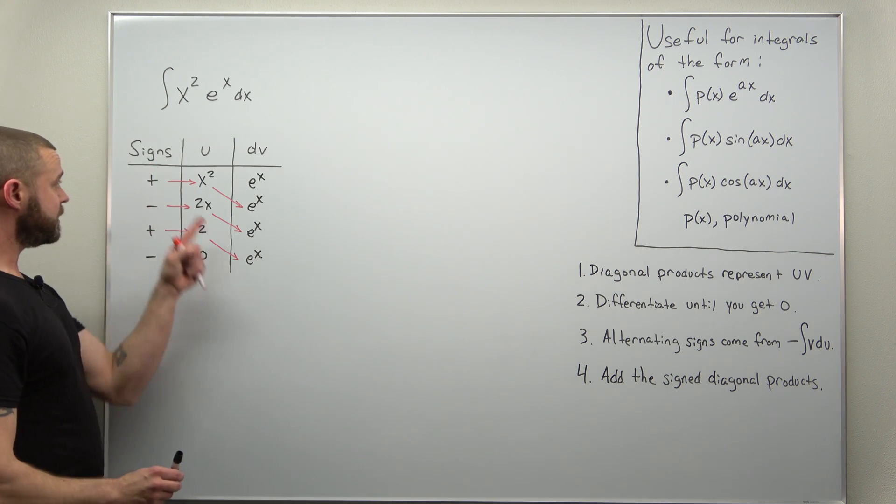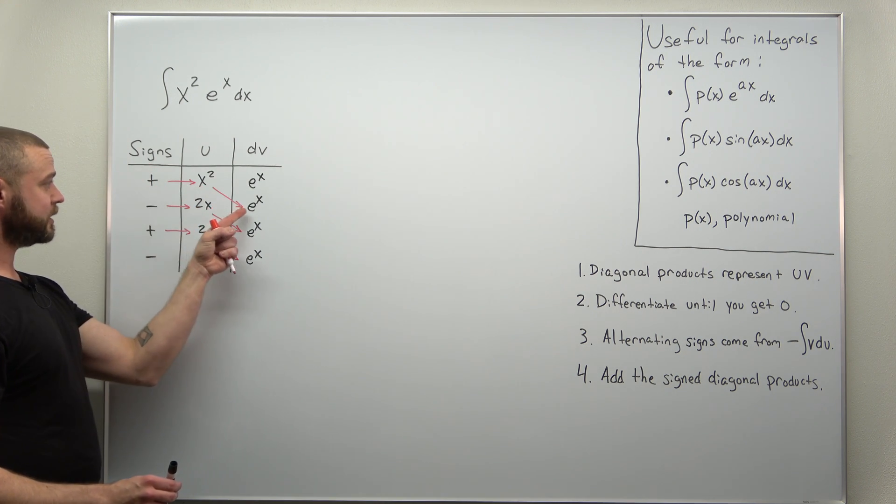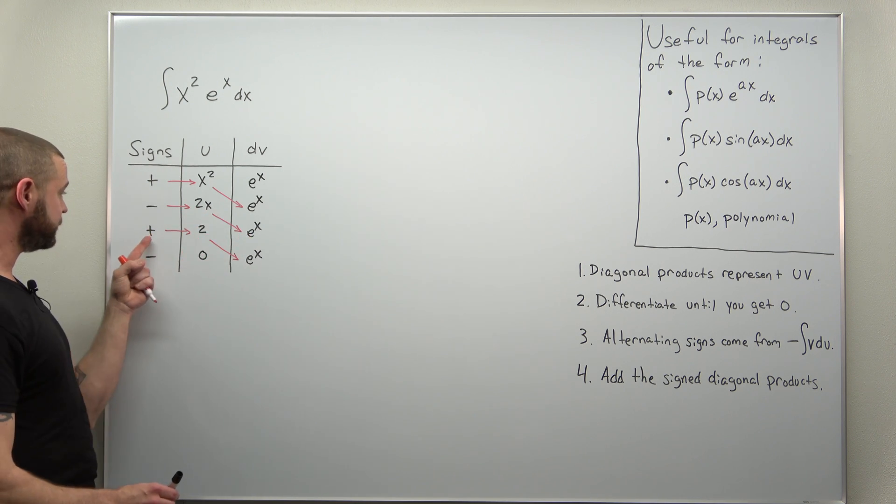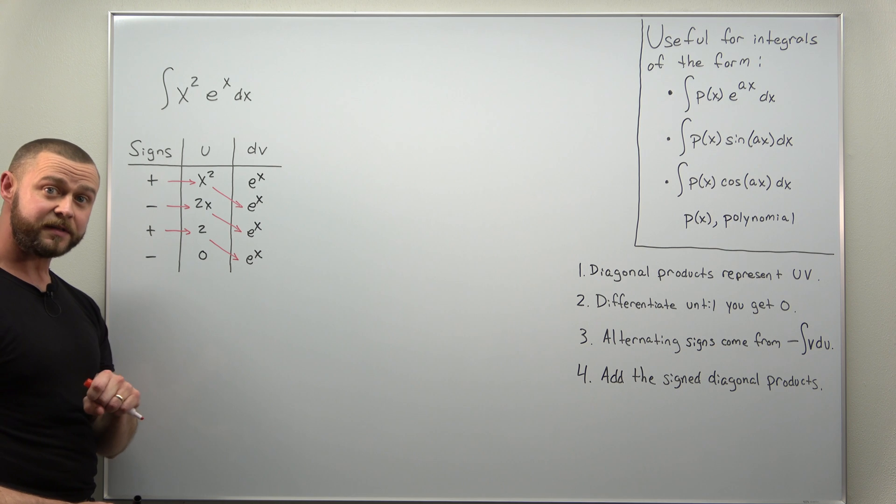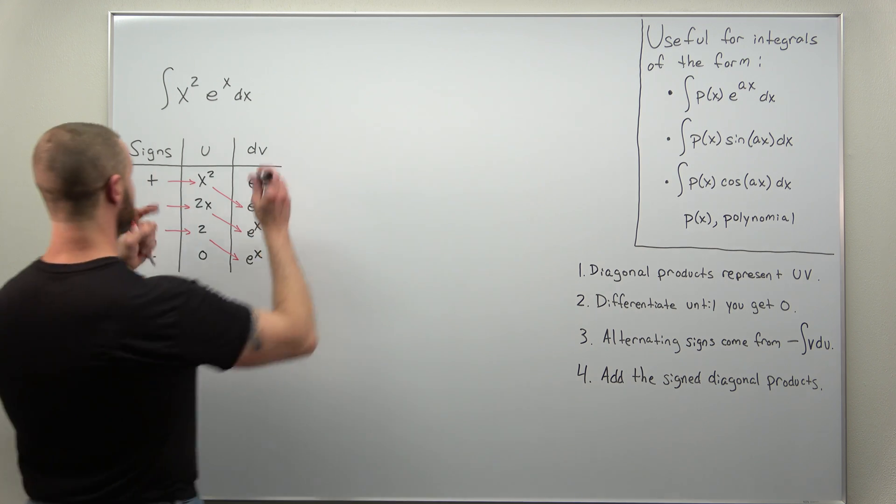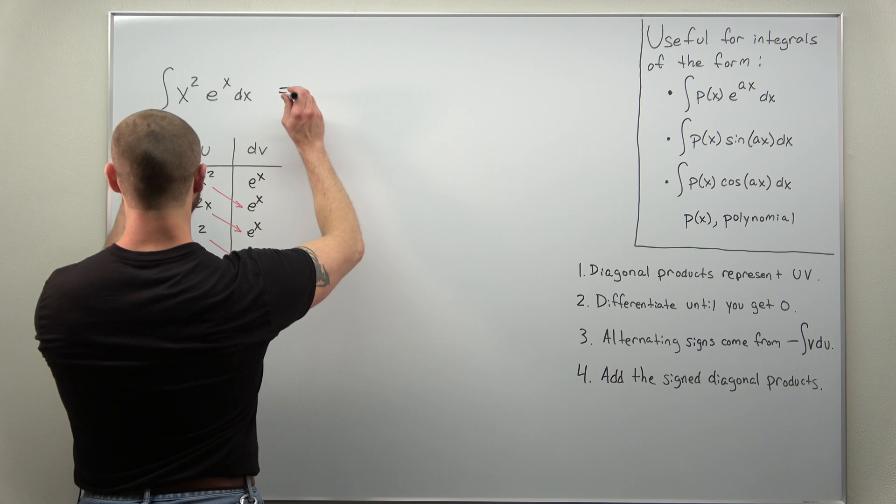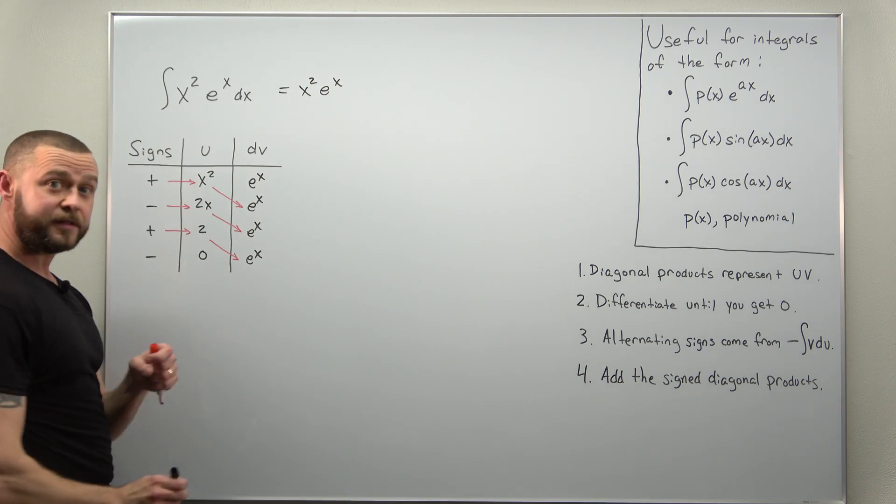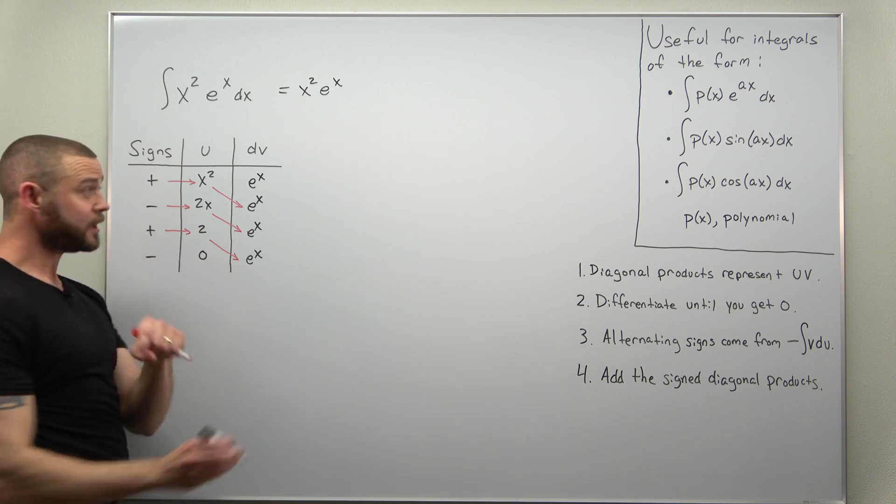We get positive times x squared times e to the x, minus 2x times e to the x, and then plus 2 times e to the x. Let me just write down the products exactly as we see them here. So plus x squared times e to the x, minus 2x times e to the x, and since we're done integrating, plus c.